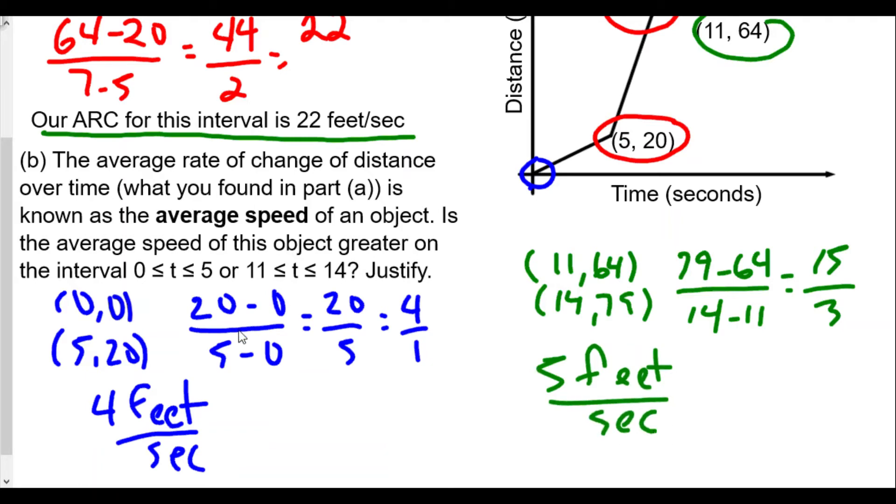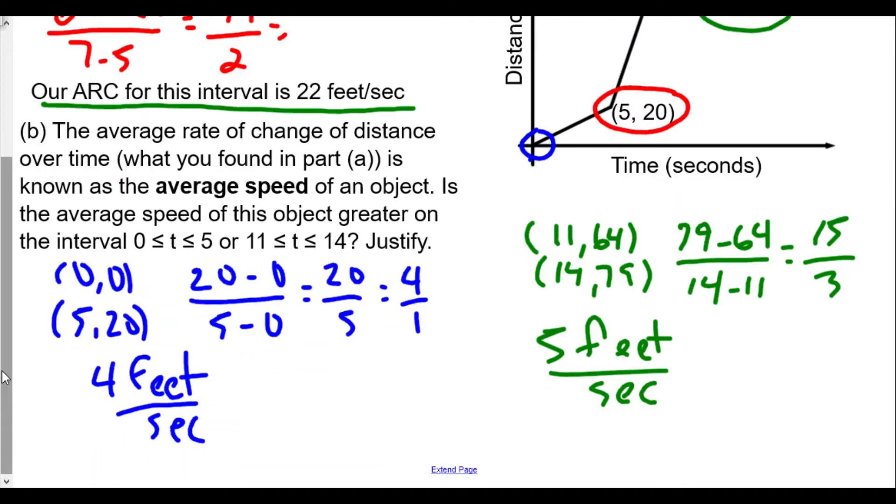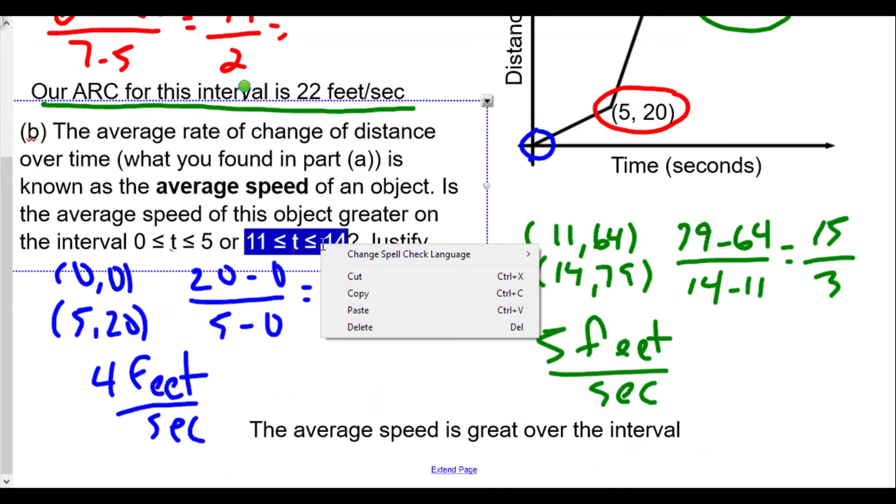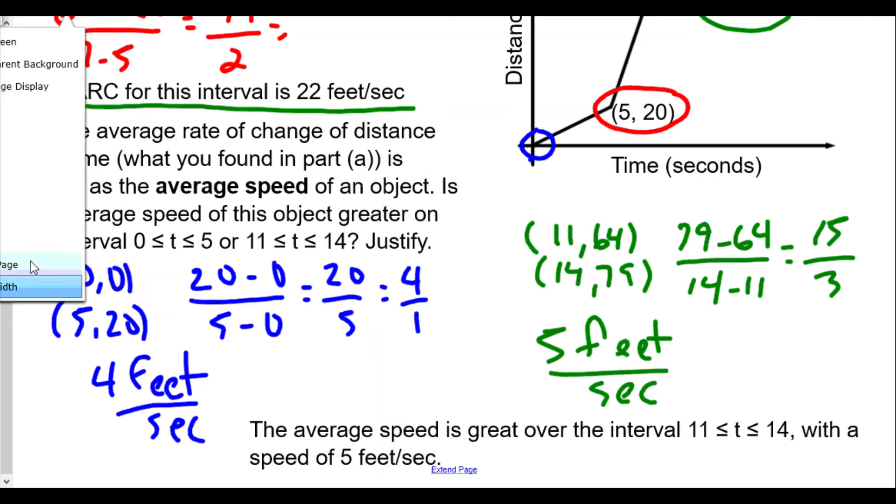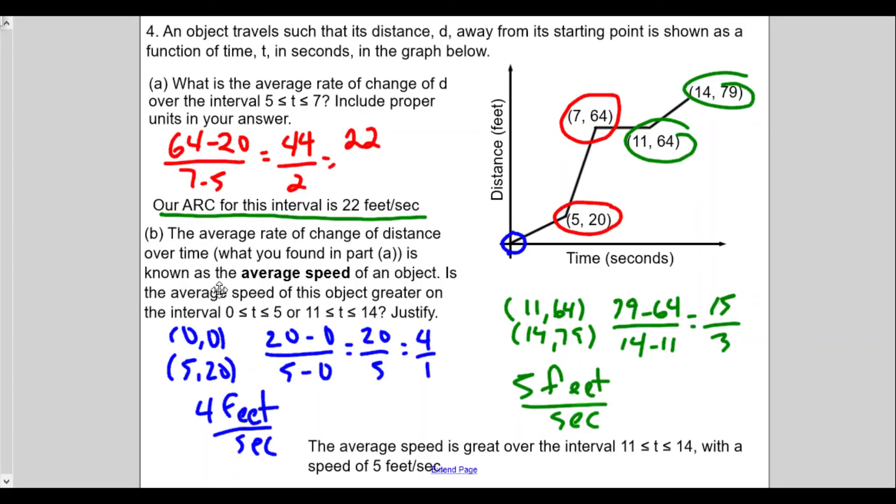So is the average speed greater along 0 to 5 or for time 11 to 14? We would say the average speed is greater over the interval from 11 to 14, with the speed of 5 feet per second. Our speed of 5 feet per second is faster than the speed of 4 feet per second. So that makes sense. That's question number four.